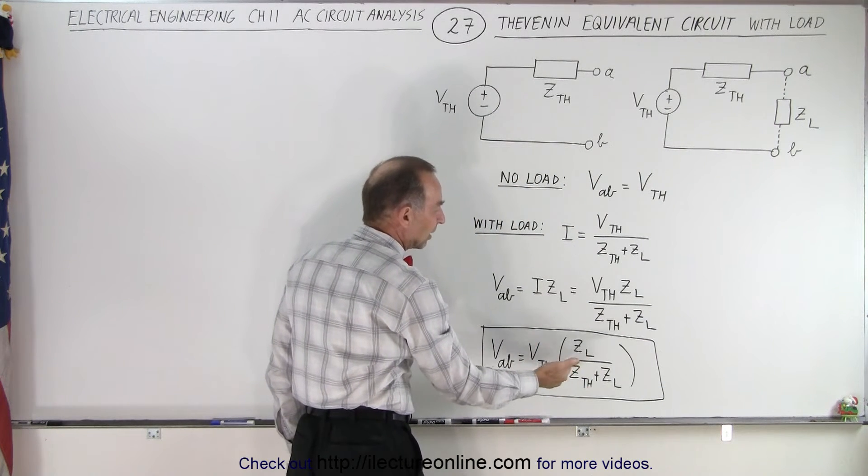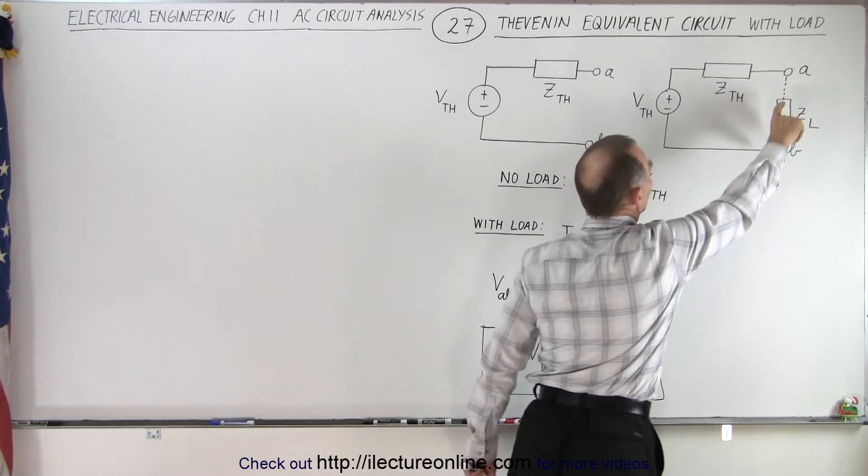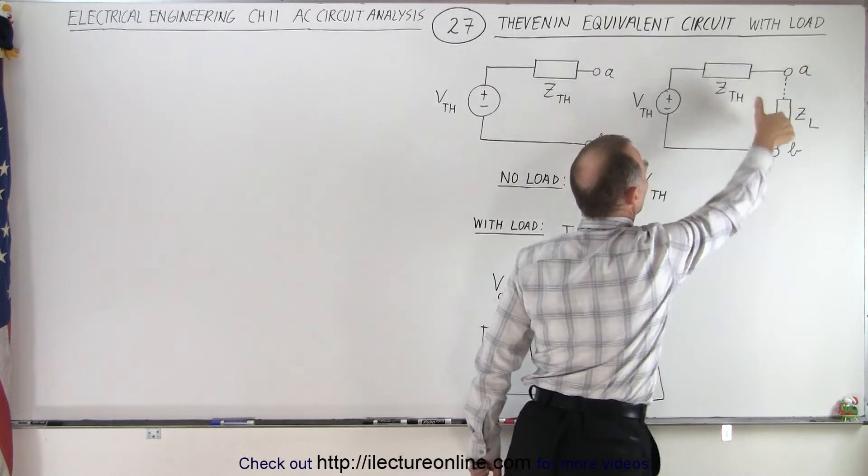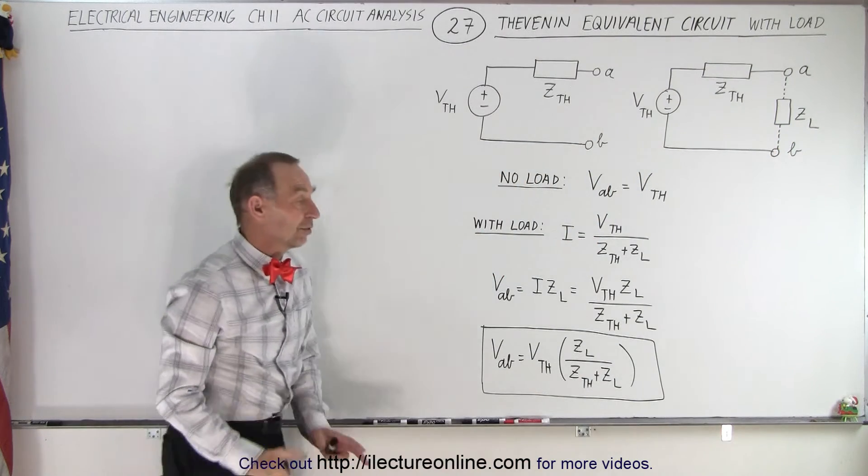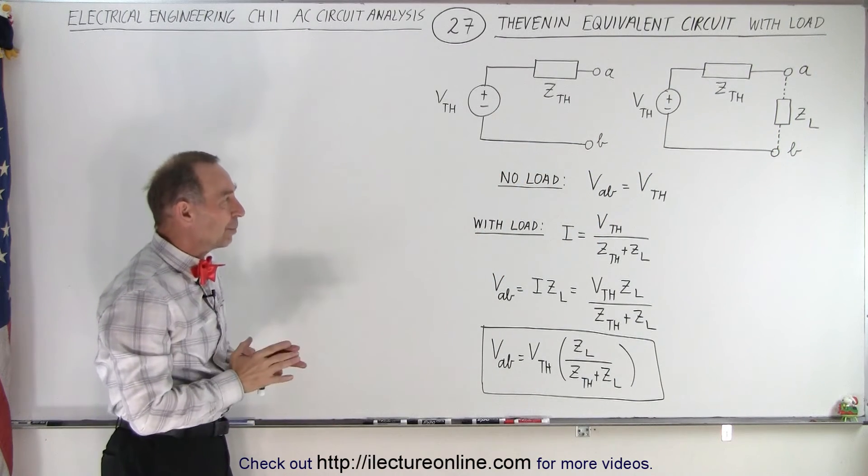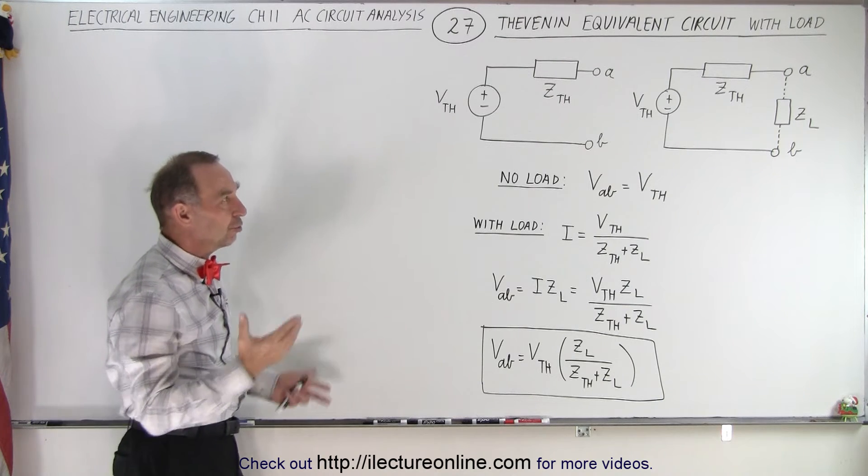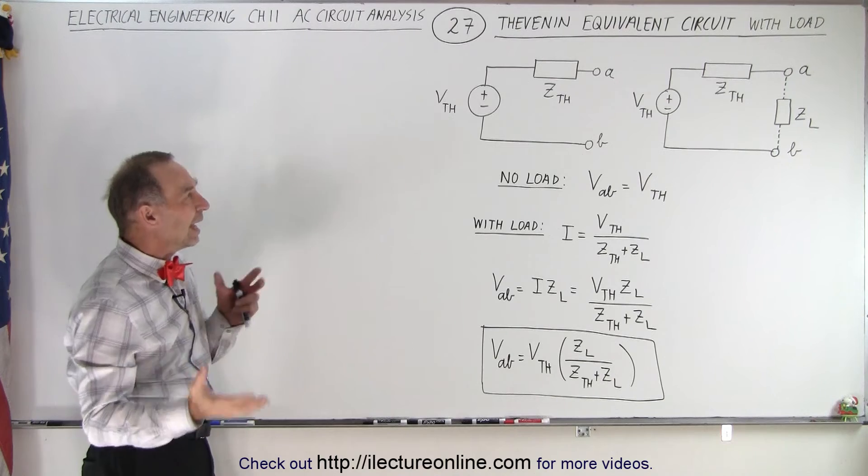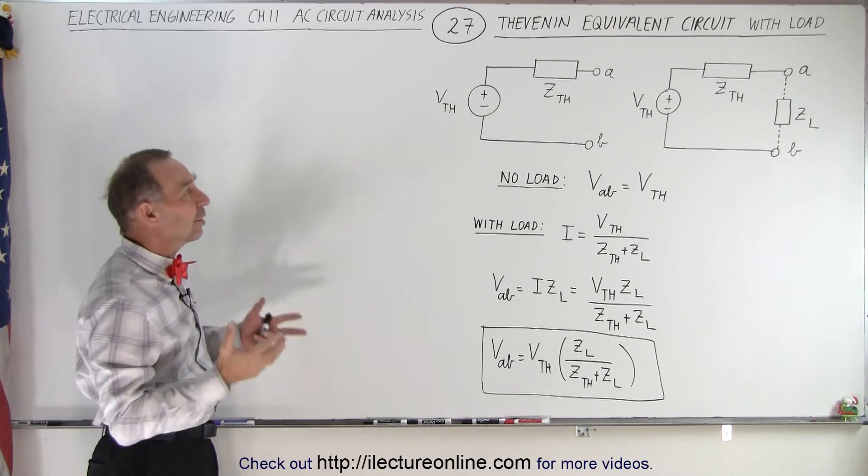Essentially, you can say that it's the fraction of the voltage of the source that's dropped across the load as compared to dropped across both of the impedances combined. So that's an important aspect to remember because sometimes we get confused when there's a load resistor or load impedance and when there's no load impedance, and what does that mean as far as the Thevenin equivalent circuit?